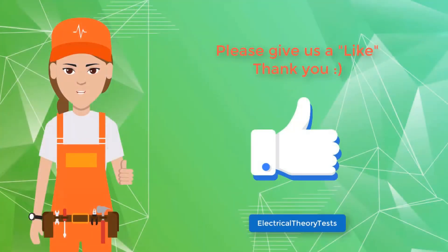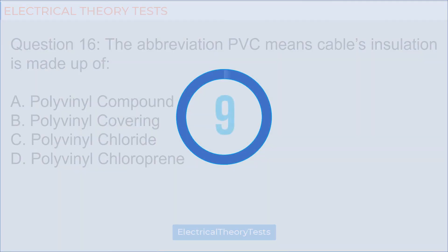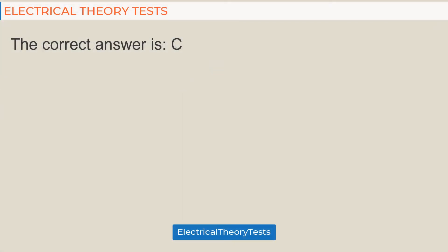Question 16: The abbreviation PVC means cables insulation is made up of — a) polyvinyl compound, b) polyvinyl covering, c) polyvinyl chloride, d) polyvinyl chloroprene. The correct answer is c) polyvinyl chloride.